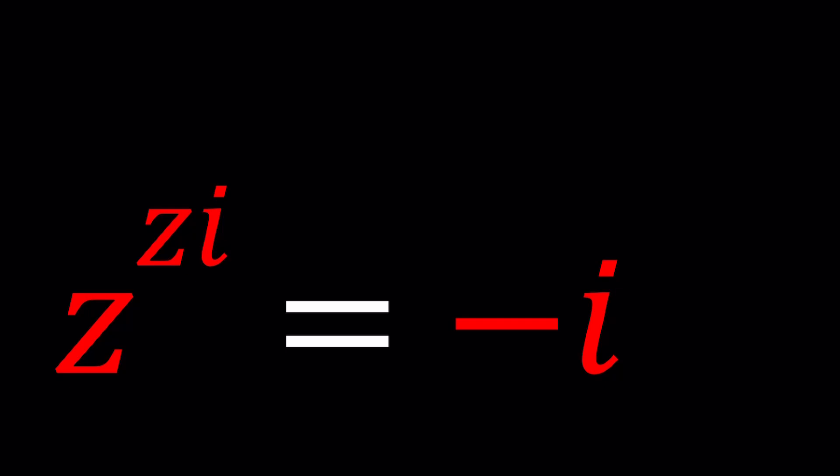We are given z to the power zi equals negative i. Now think about this. At this point you probably guessed the solution, right? Please be quiet if you did. Don't let anyone else know. So here's what we're going to do.